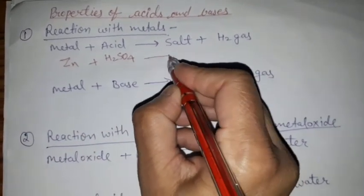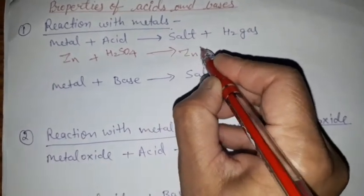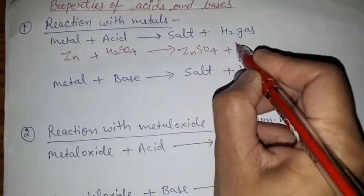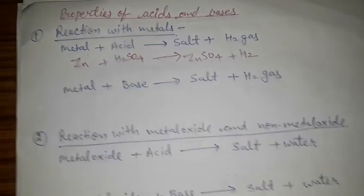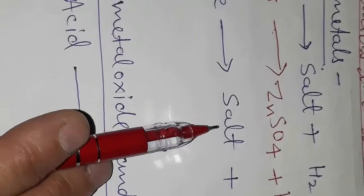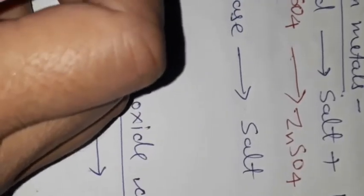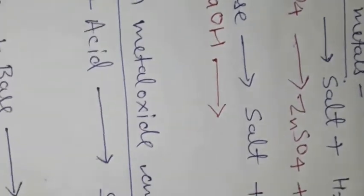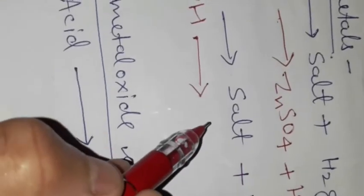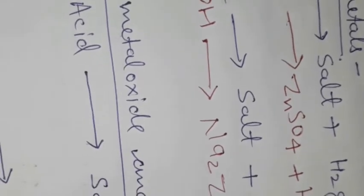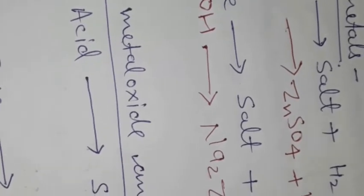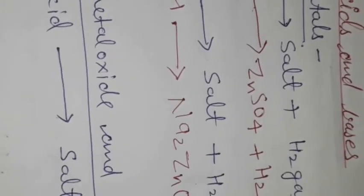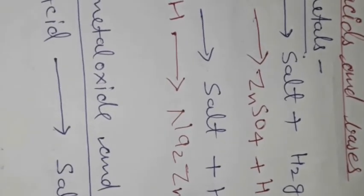When metal reacts with a base, it also forms salt and hydrogen gas. For example, metal Zn reacting with base NaOH forms the complex salt Na₂ZnO₂H₂. So when acids and bases react with metals, they produce hydrogen gas.